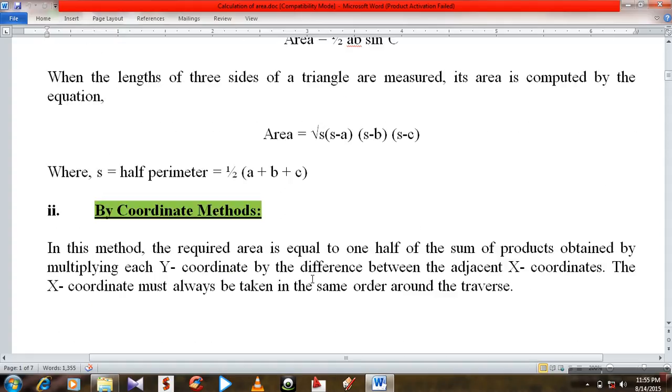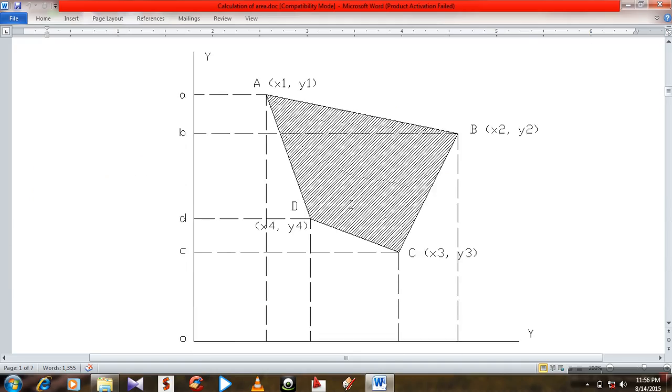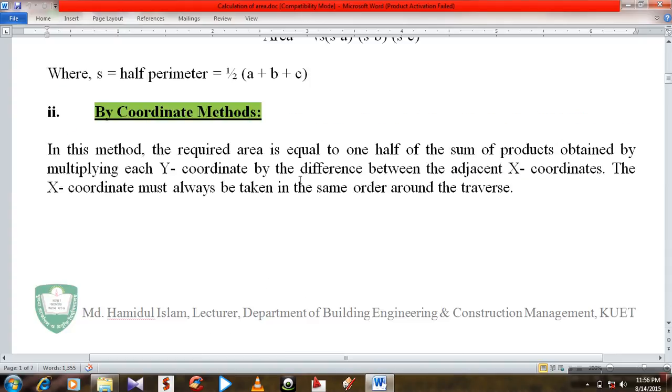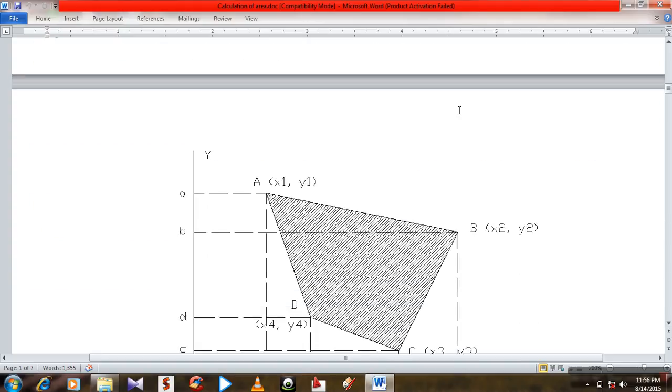Second one, by coordinate method. In this method, the required area is equal to one half of the sum of products obtained by multiplying each y coordinate by the difference between the adjacent x coordinates. The x coordinate must always be taken in the same order around the traverse, the same order.